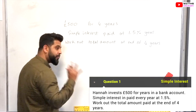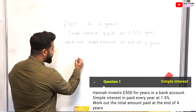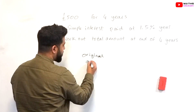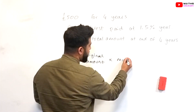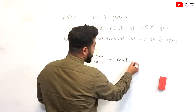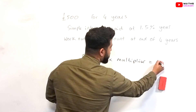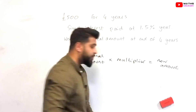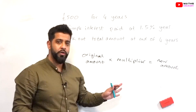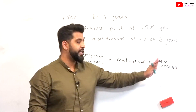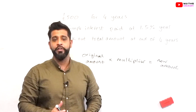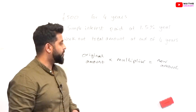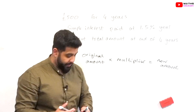Just a quick reminder — you need to know this formula: original amount times by the multiplier is equal to the new amount. I have gone through this formula before in one of my videos on percentages, and you can look that up if you need more clarification.